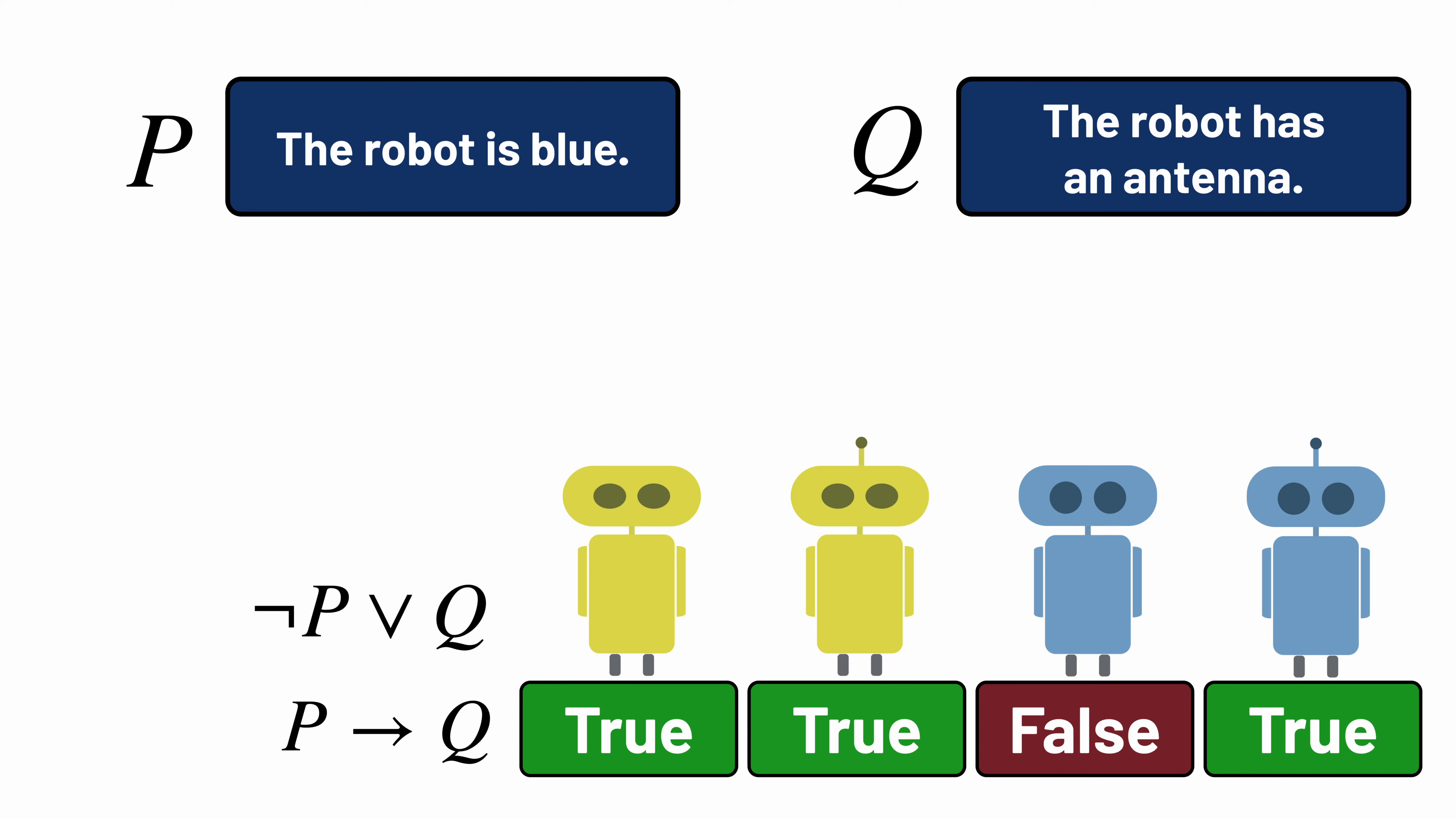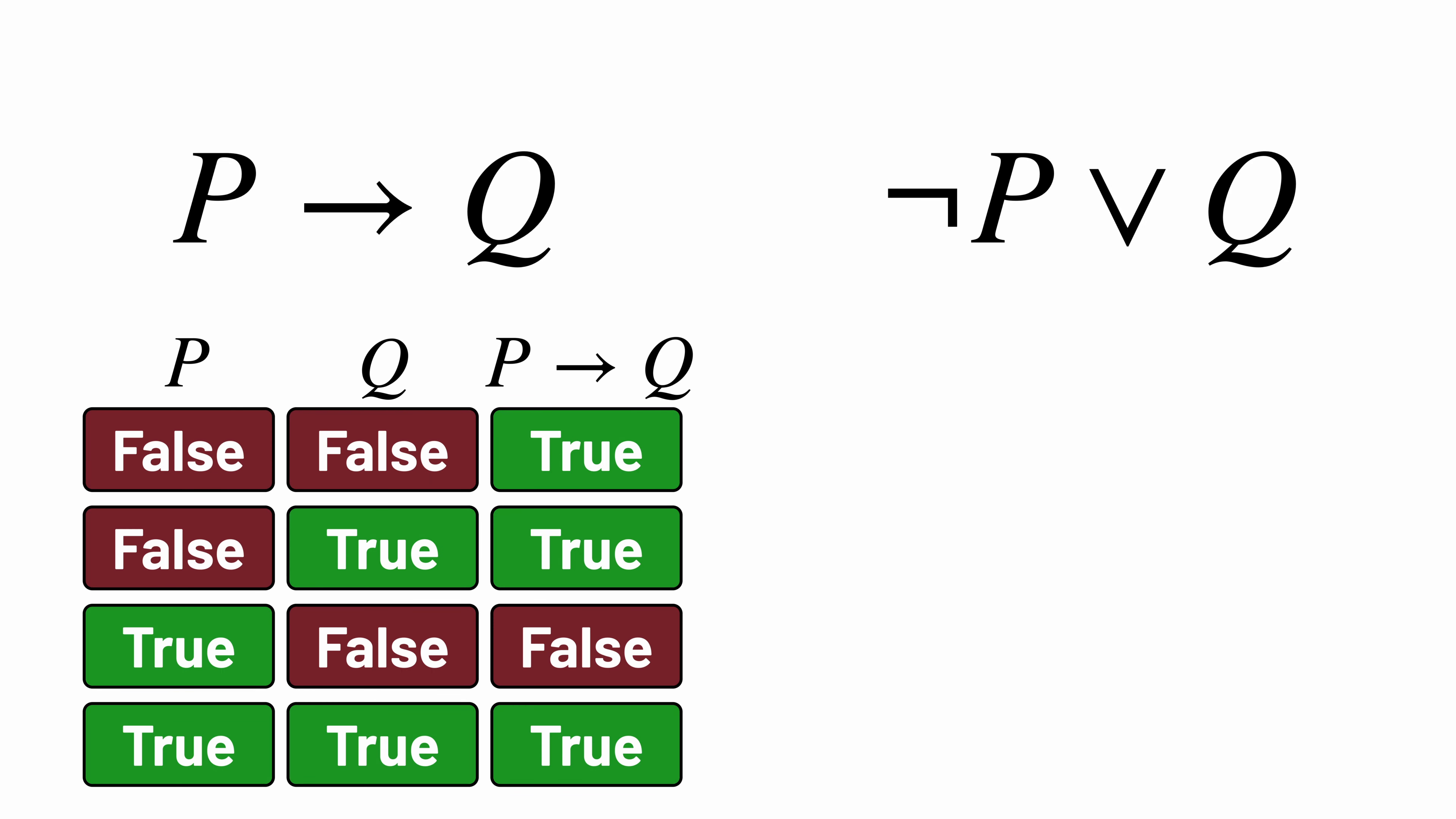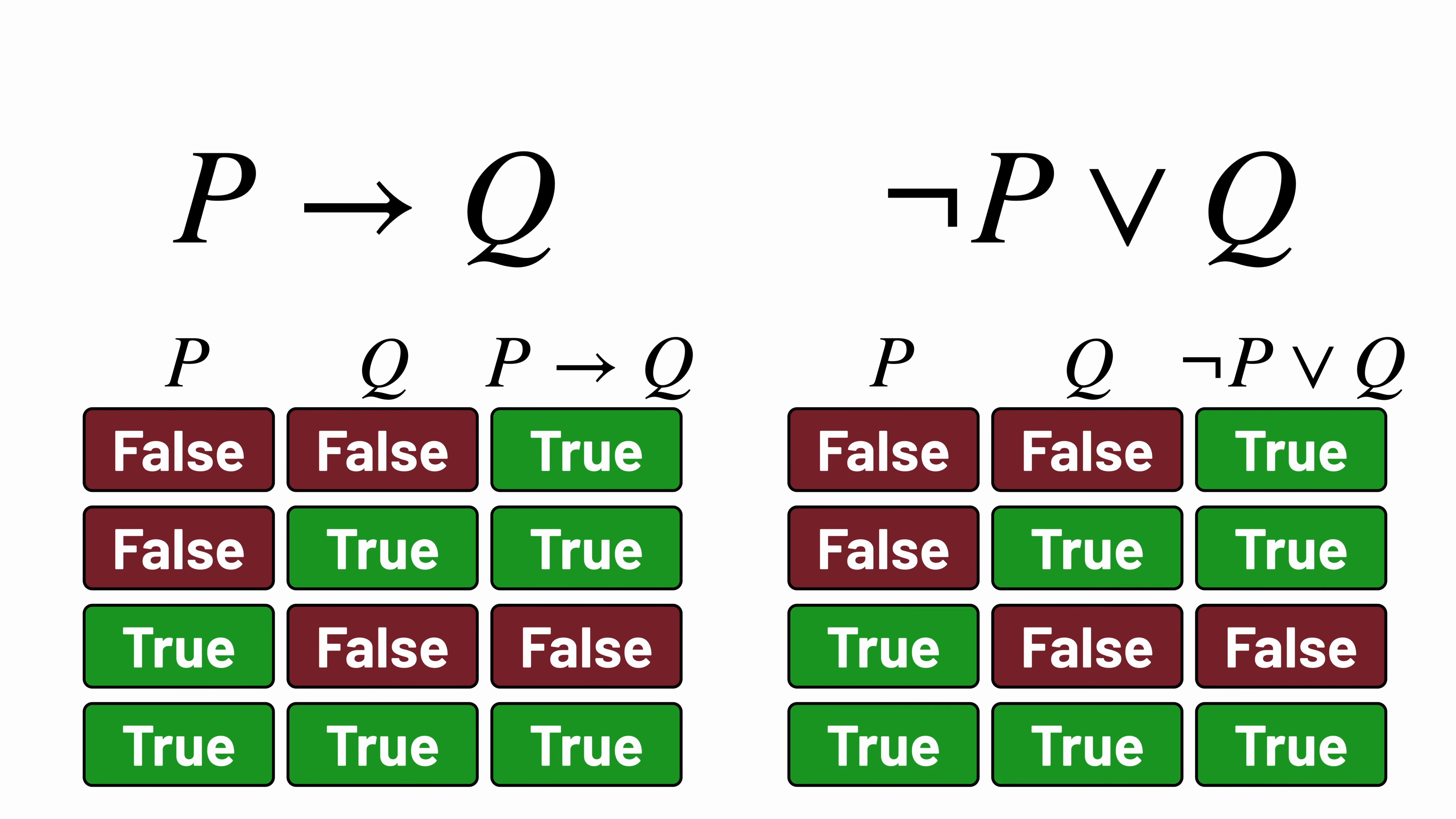And we can prove that by writing out the truth tables for each formula. We can describe the situations where P implies Q is true, and describe the situations where not P or Q is true. And it turns out the truth tables are the same. No matter what the values are for these variables P and Q, these two logical formulas will always have the same truth value.